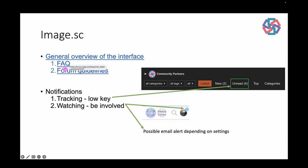There are frequently asked questions and forum guidelines posts — those links will be available if you download this document. There are two main ways to follow the forum: tracking and watching. Watching is more for if you want to be involved in a topic — you can watch QPath and get notifications or emails when someone responds to your posts. If you just want to check in every week or two, you can track things instead and get a list of unread items to skim through.